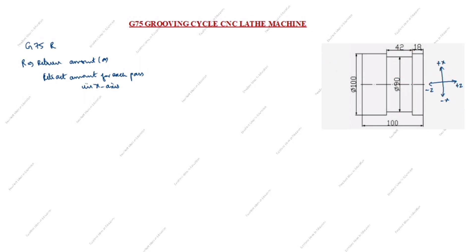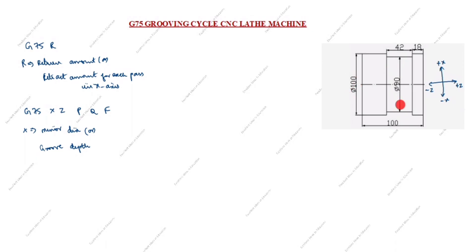The G75 format is: G75 X, Z, P, Q, F. What is X? X is the minor diameter or groove depth. You can see here — this is the minor diameter. The major diameter is 100. This is the groove depth. Next, Z — Z is the total distance in the Z axis or ending point of the groove.